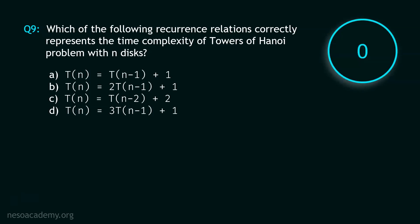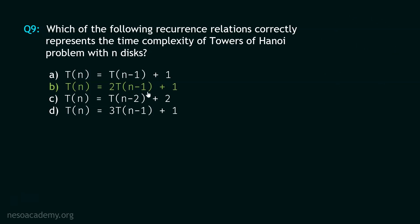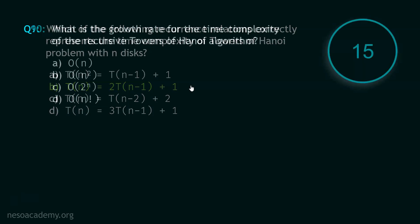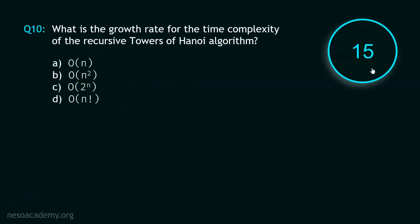Stop. Here we have been asked to write the recurrence relation of the time complexity of the Towers of Hanoi problem with n disks. The recurrence relation is T(n) = 2·T(n-1) + 1. You already know the algorithm of Towers of Hanoi, and writing the recurrence relation for that algorithm is not that difficult. This is the recursive part: T(n) = 2·T(n-1) + 1. Now let's move to question number 10, and your time starts now.